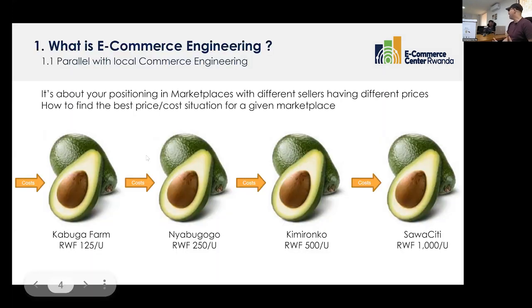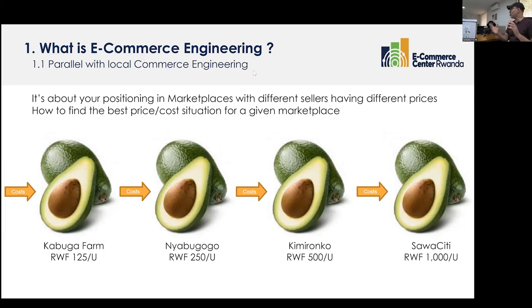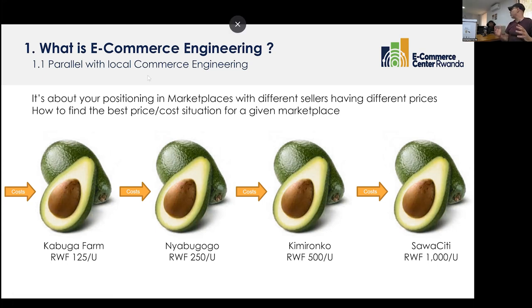You all know avocado — and this works with any commodity: coffee, lemon, whatever, even services, digital products, or physical products. By e-commerce engineering we simply mean: how do you position yourself as a seller in a crowded marketplace with many competitors all selling at different prices? The result of e-commerce engineering is to find the best price-cost situation that allows you to make enough sales volume while maintaining good margins. Sometimes people just go to market by luck without doing any study — but luck doesn't always play in your favor.